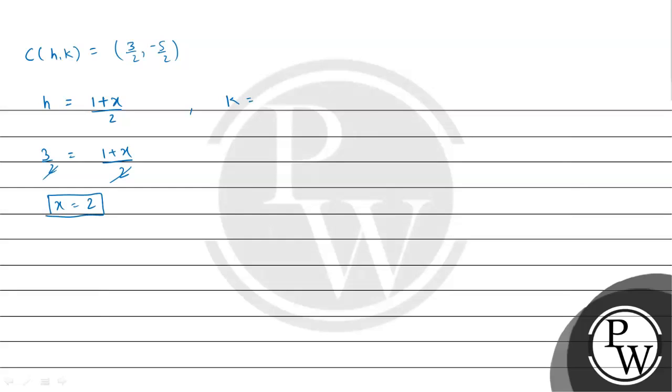Similarly, k = (-6 + y)/2. Since k = -5/2, we have -5/2 = (-6 + y)/2. Solving this gives y = -5 + 6 = 1.